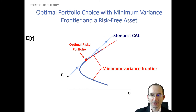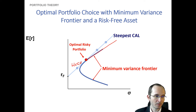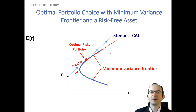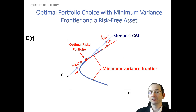Where an investor falls on this capital allocation line depends on their risk aversion. If they have a high coefficient of risk aversion, they'll hold more in the risk-free asset and sit lower on the line. If they have a low coefficient of risk aversion, they'll go higher — perhaps borrowing at the risk-free rate or at some rate above it to invest more in the risky asset.